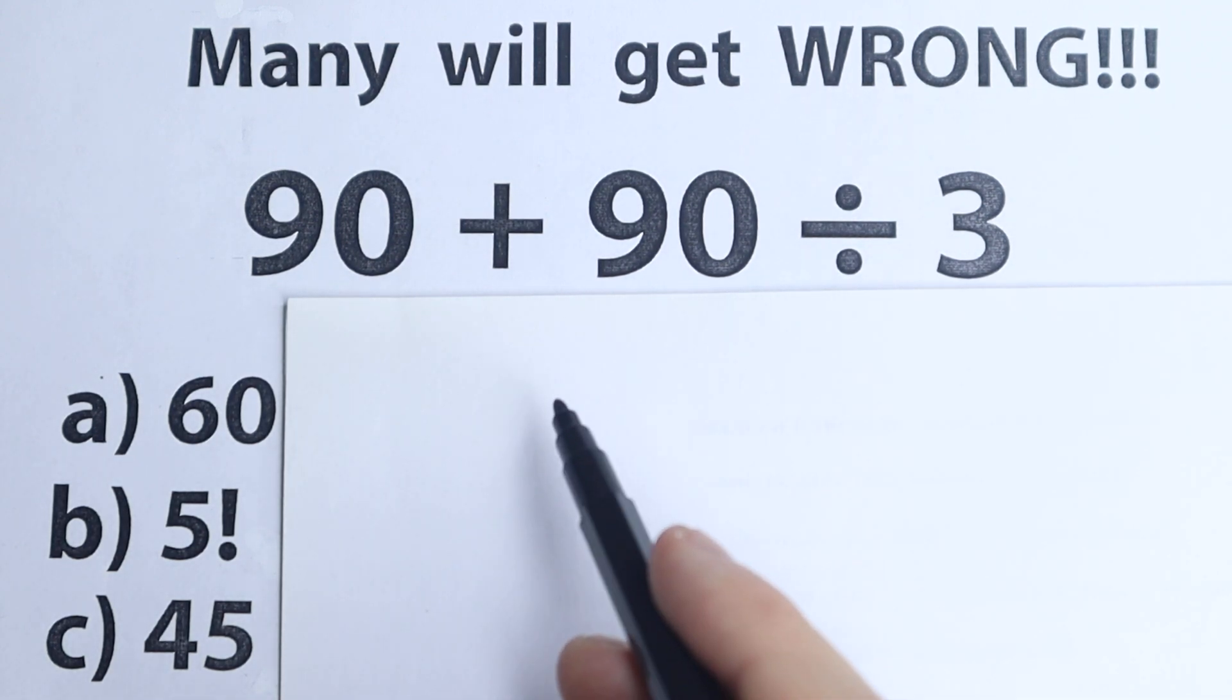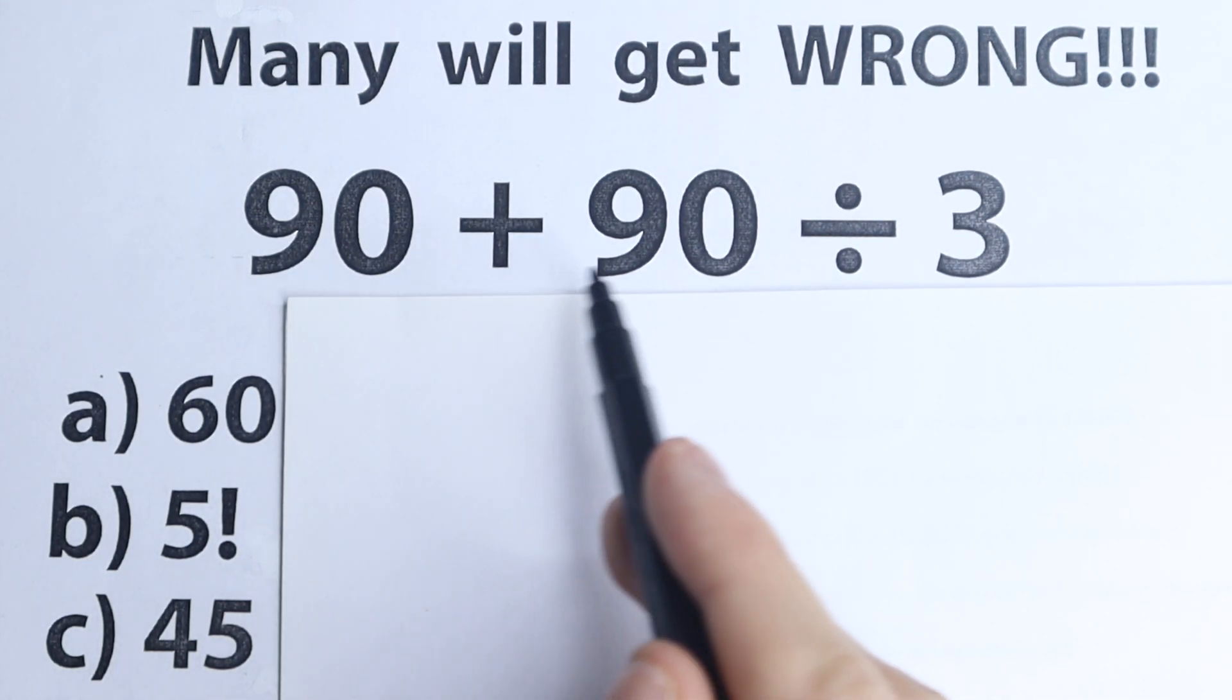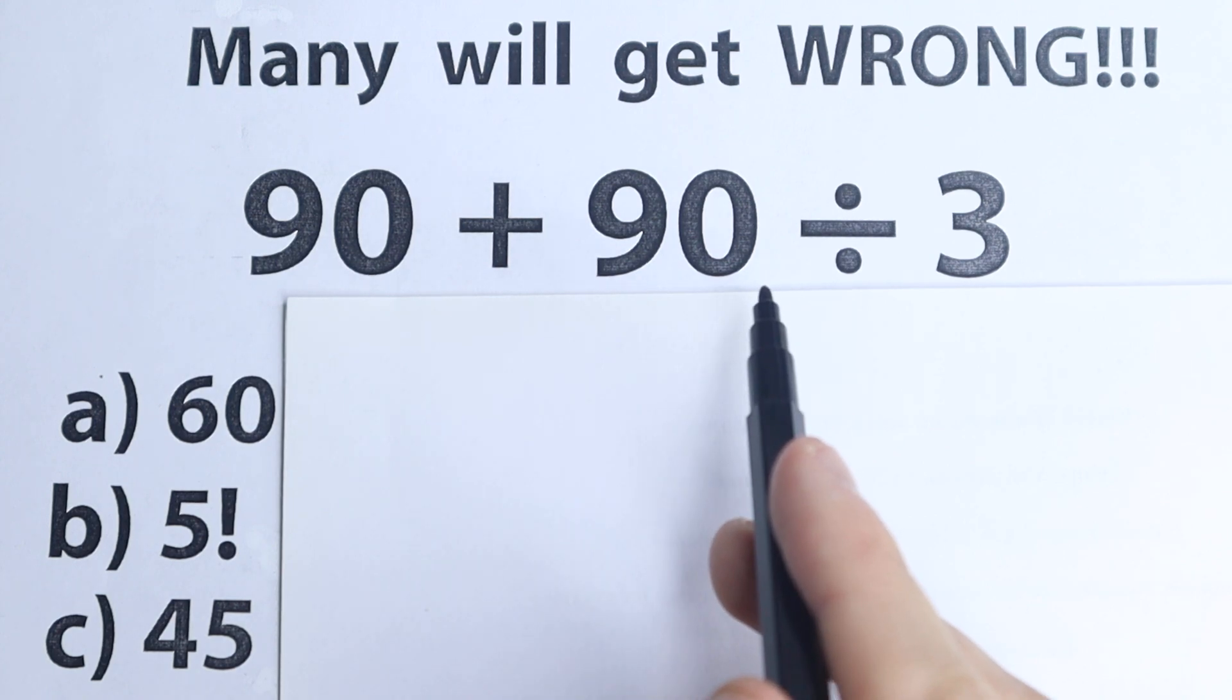I don't want you to use your calculator because as you can see, it's a very simple question: 90 plus 90 divided by 3. So what is the correct answer?